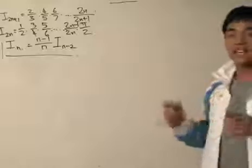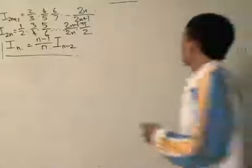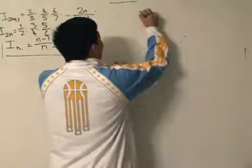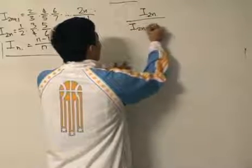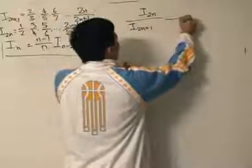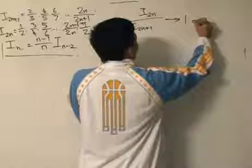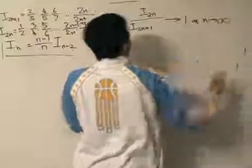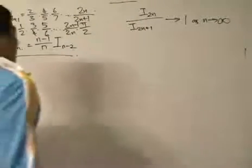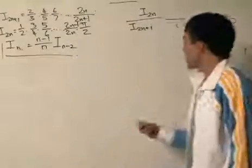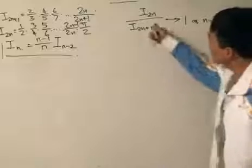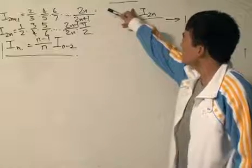Later we're going to just simply let n tend towards infinity. But what is the limit that we need to use? Well, the limit that we need to use would be this: the ratio of i_n divided by i_n+1 tends towards 1 as n tends towards infinity.